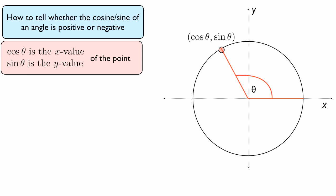So by looking to see whether the x value and y values of that point in the coordinate plane are positive or negative, then we can determine whether cosine and sine are positive or negative.